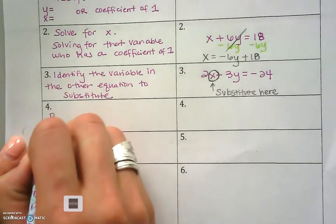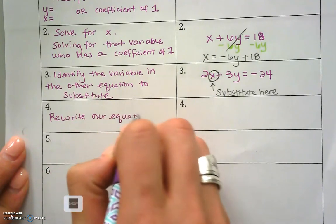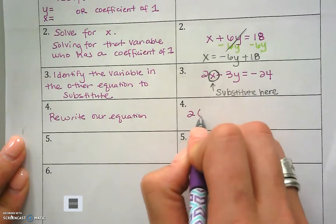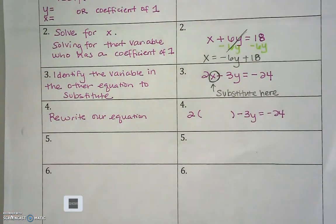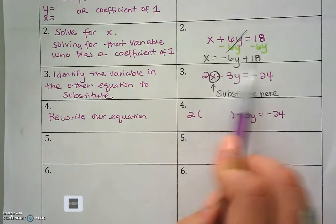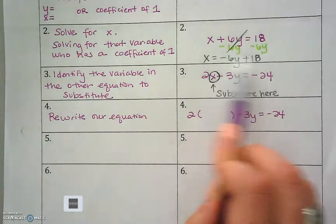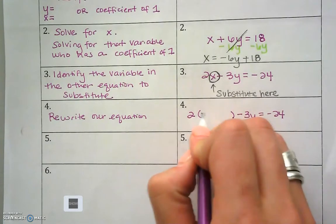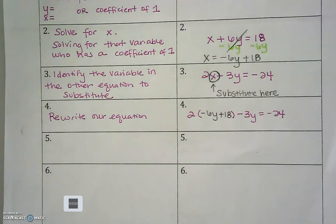We're going to rewrite our equation. We have 2, and I have to substitute something in for x, minus 3y equals negative 24. We identified the variable we're substituting for because we got x equal to something. Both of those x's are the same, so I get to substitute — I get to change what that x looks like — and I substitute in negative 6y plus 18.